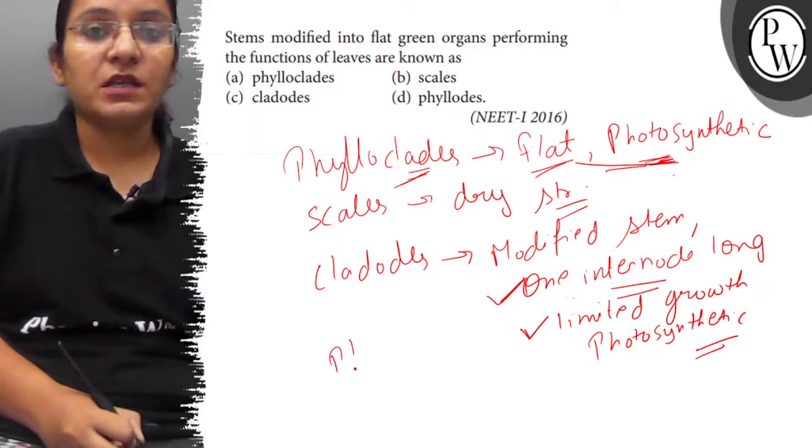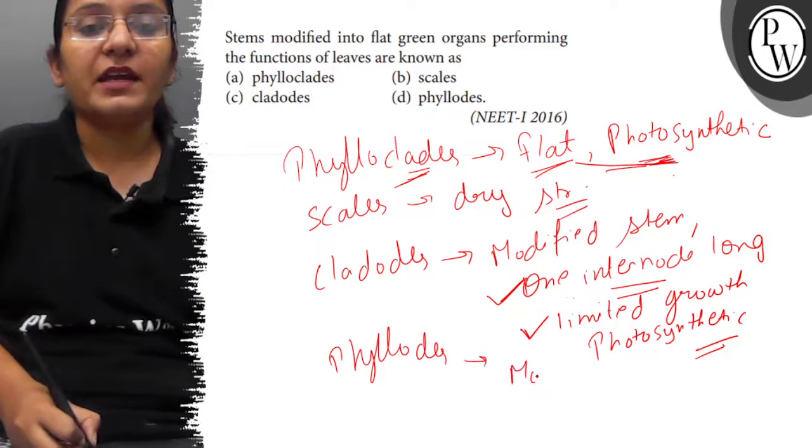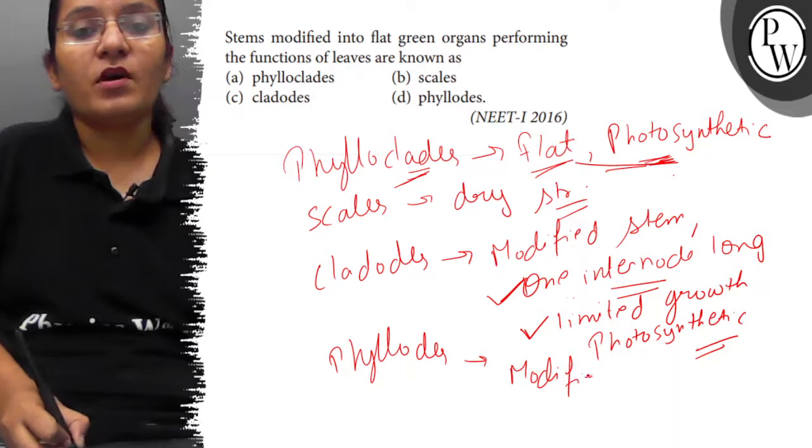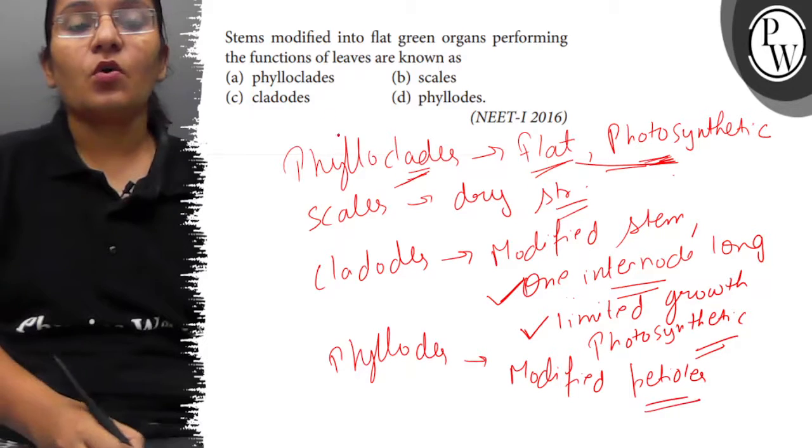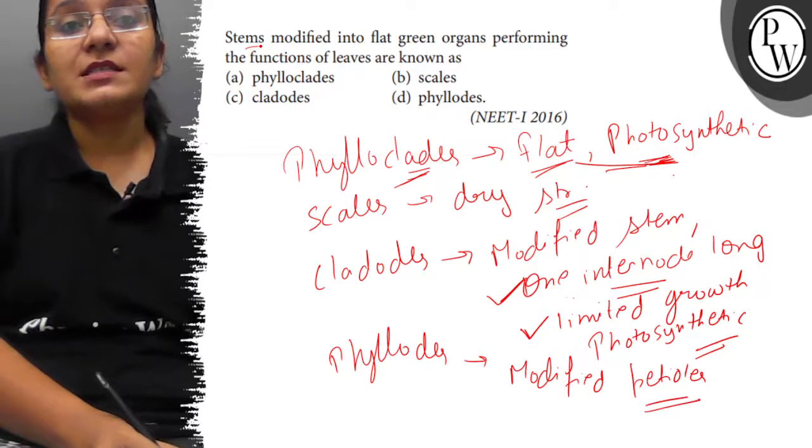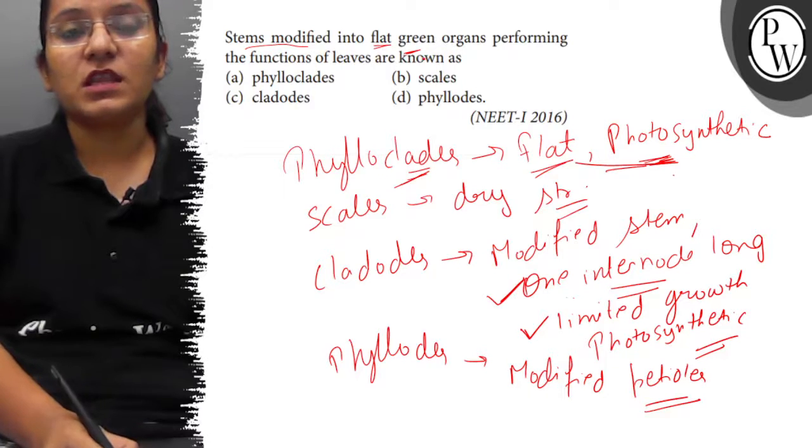Option D, phyllodes - phyllodes are modified petioles. So what does the question ask? Stem modified into flat green means photosynthetic.